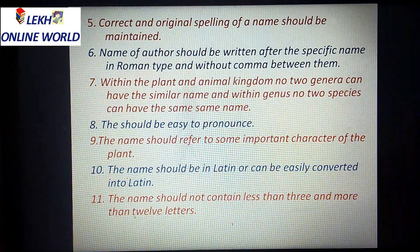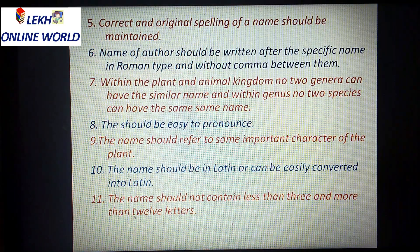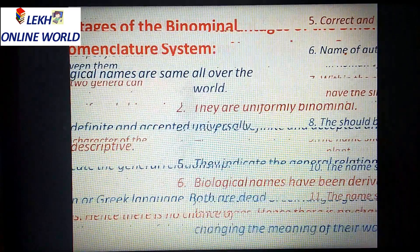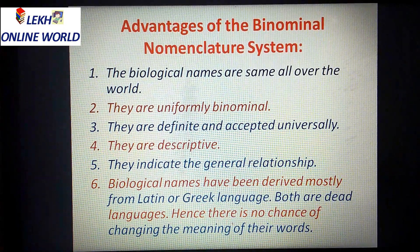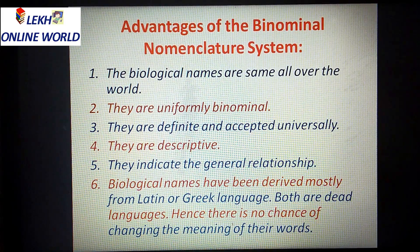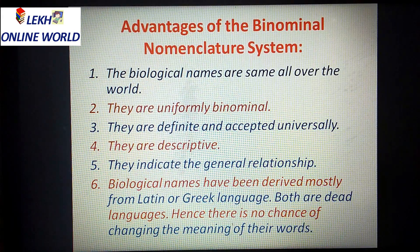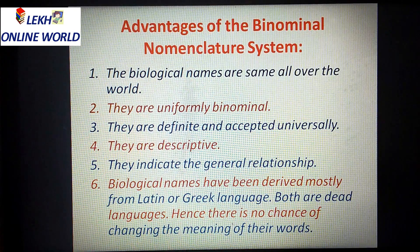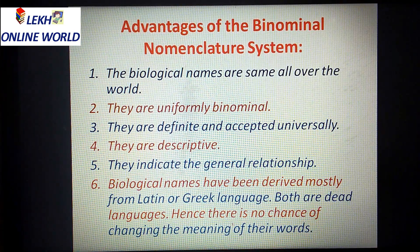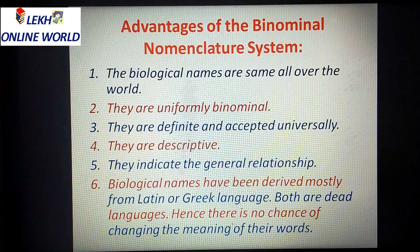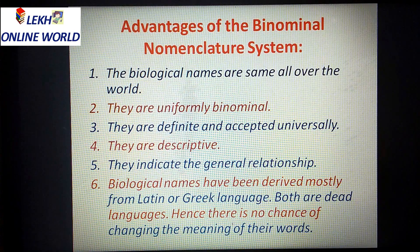The name should not contain less than three and more than twelve letters. So no name should have fewer than three letters, and no name should have more than twelve letters. These scientific names remain the same throughout the world — in any country, the scientific name will be the same. They are uniformly binomial, meaning they consist of two words: genus and species.